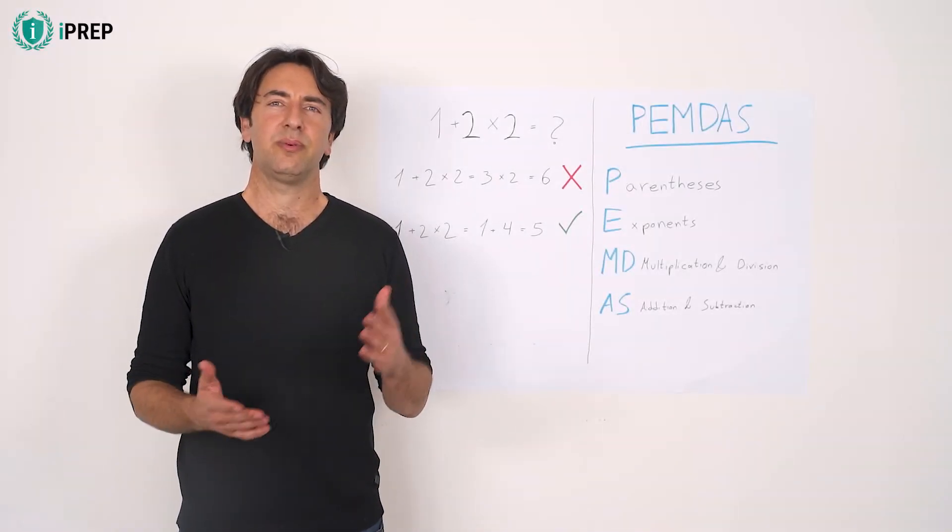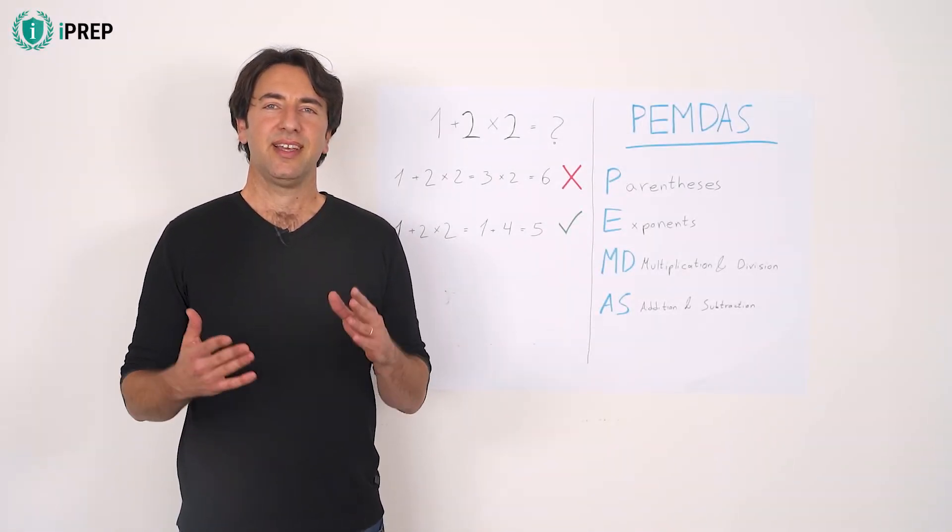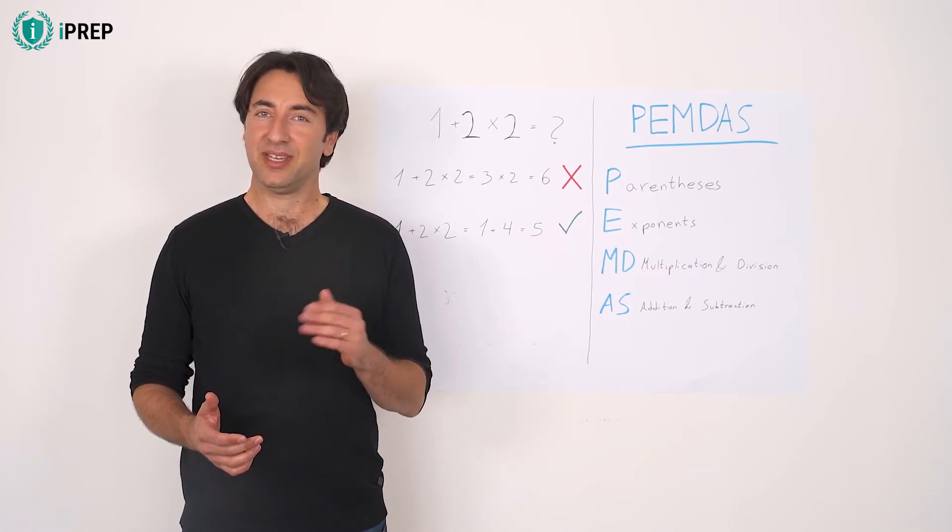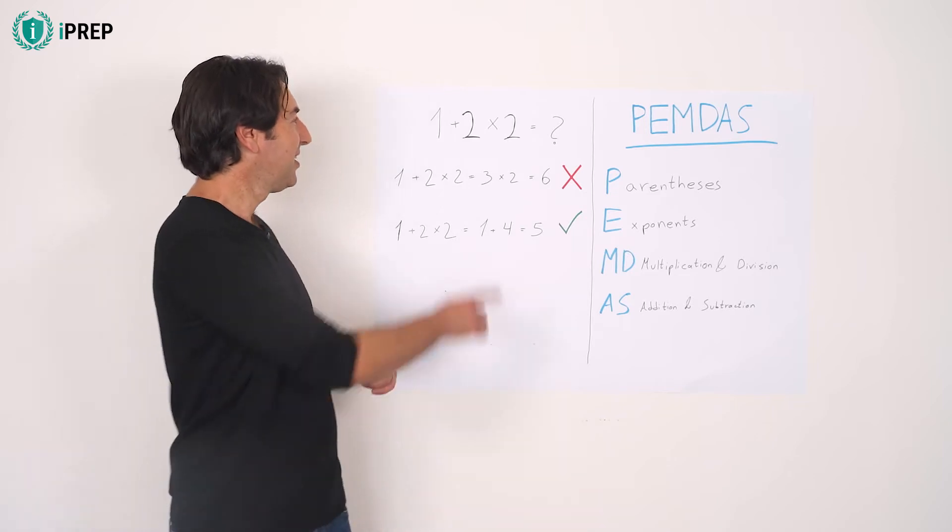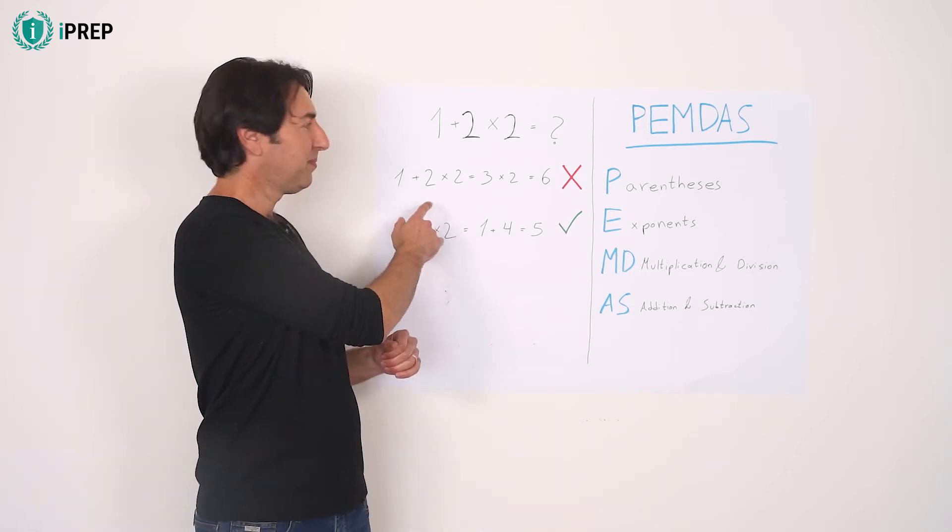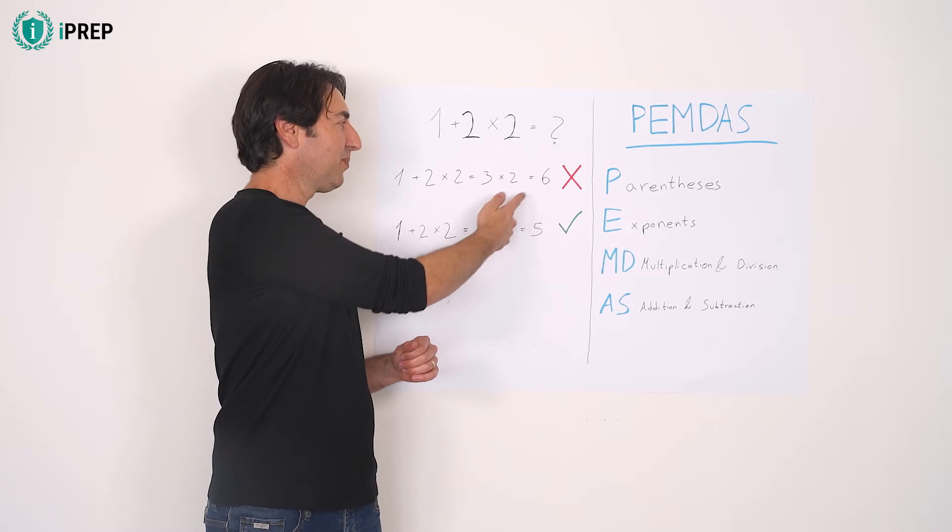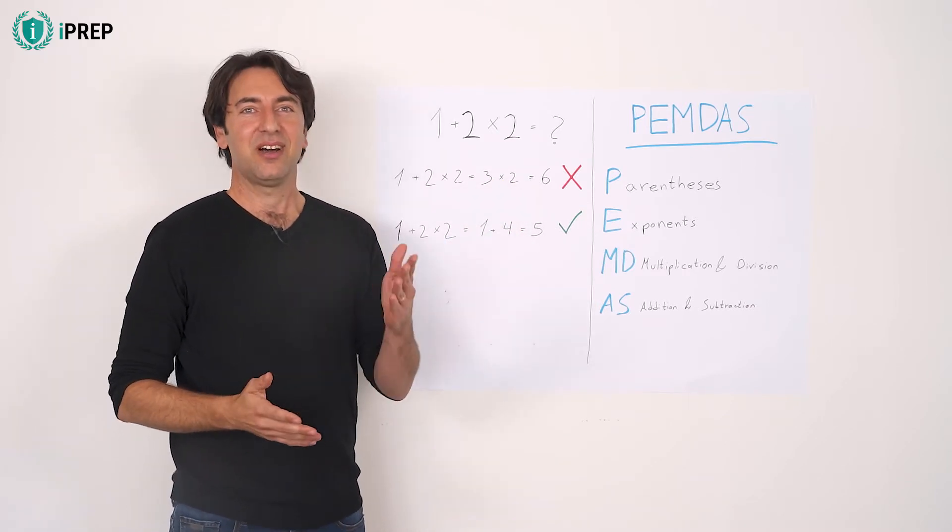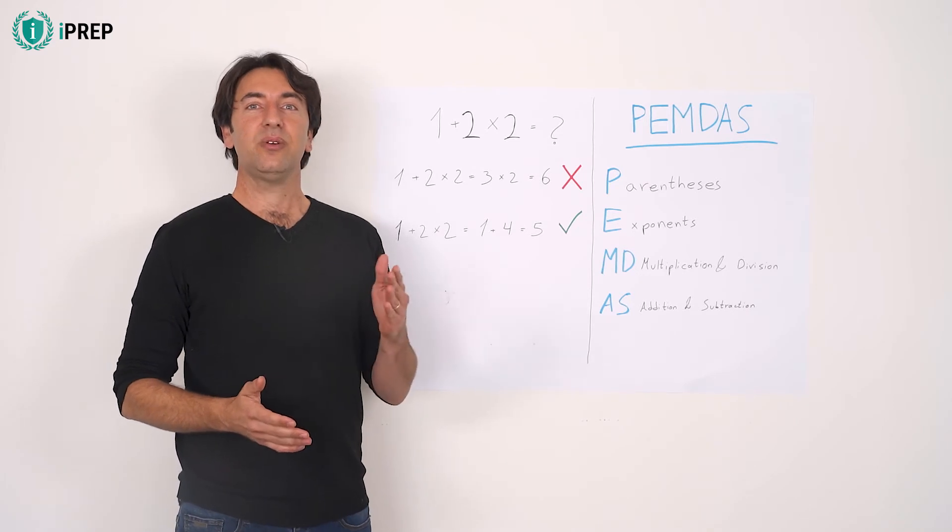What is the order of operations? Can there be an easier drill than 1 plus 2 times 2? 1 plus 2 equals 3, times 2 equals 6. Is that so? Of course that's wrong.